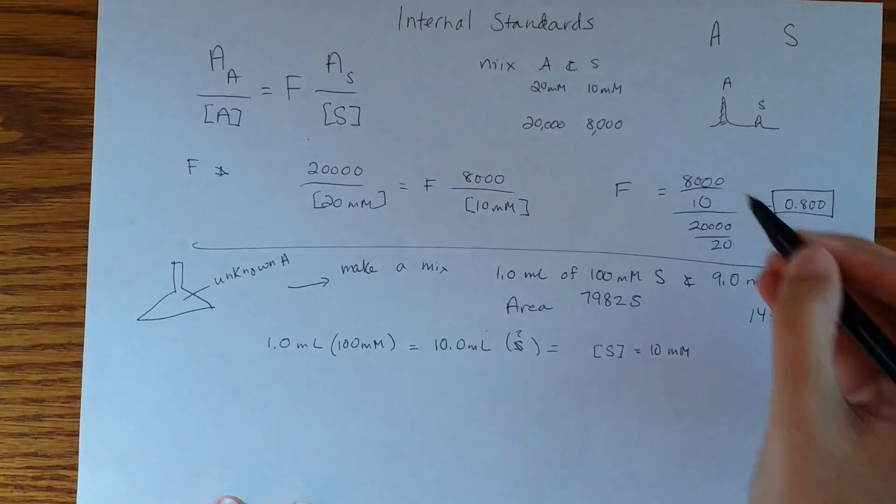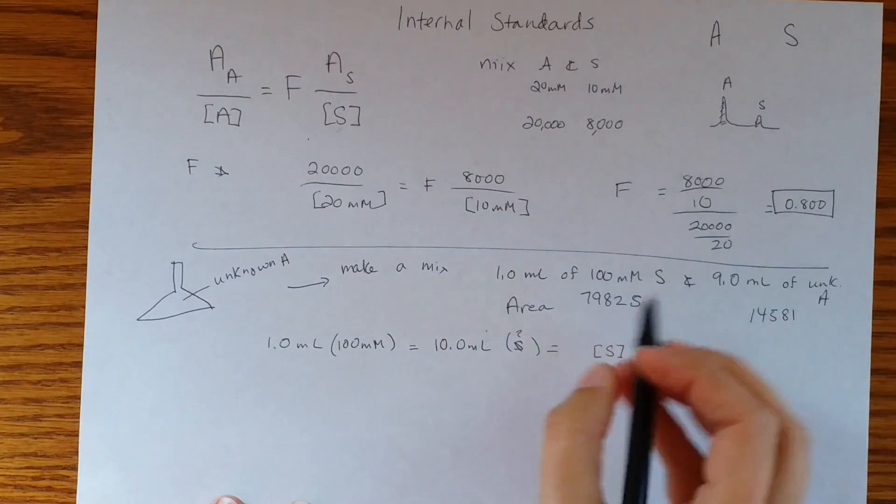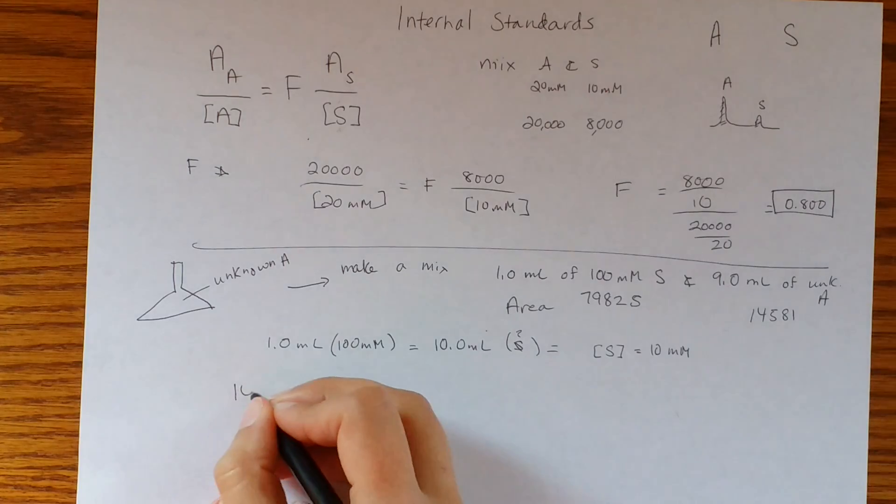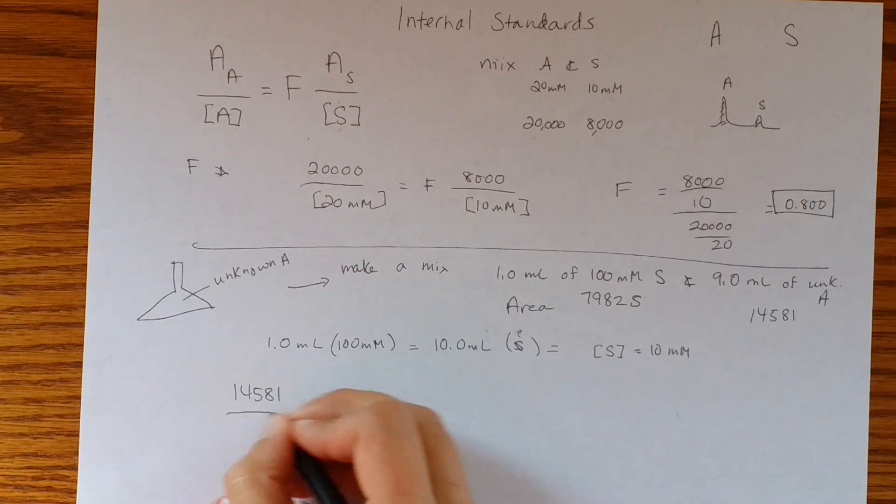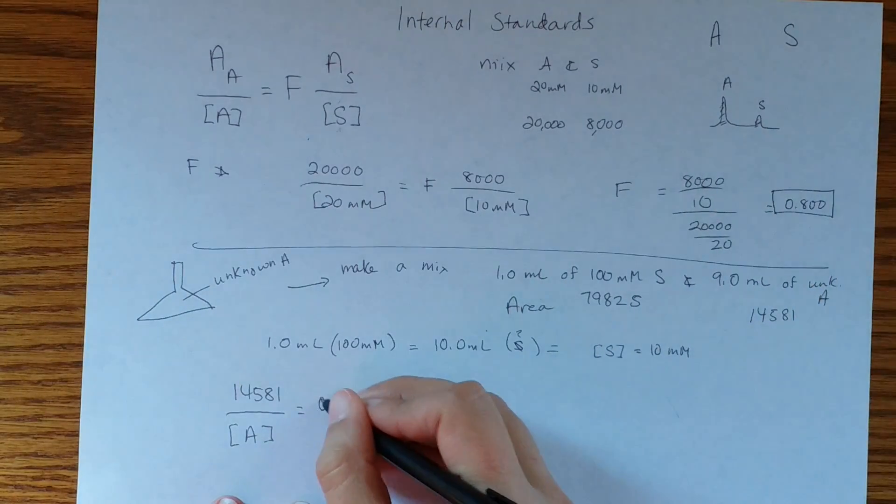Next up you go ahead and you plug things in. Now the area of our analyte goes here, it's 14.581. What do you put on the bottom? We don't know, okay, so that's our variable. And then we need F, good, we just got that in our previous step.